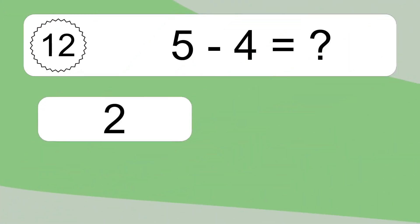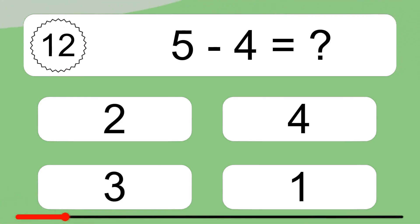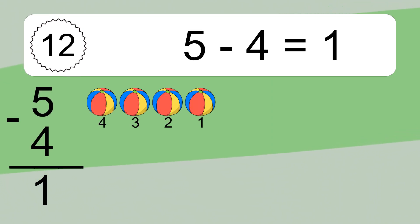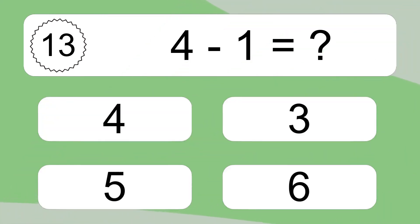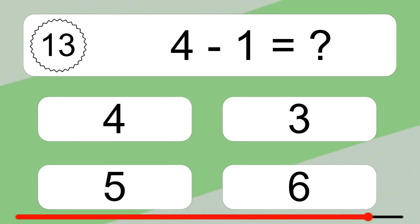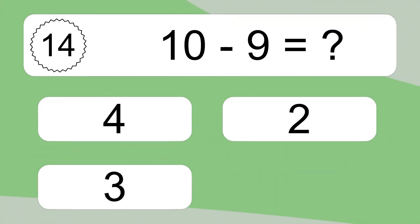5 minus 4 equals what? 5 minus 4 equals 1. Let's count it: 4, 3, 2, 1. 4 minus 1 equals what? 4 minus 1 equals 3. Let's count it: 3.